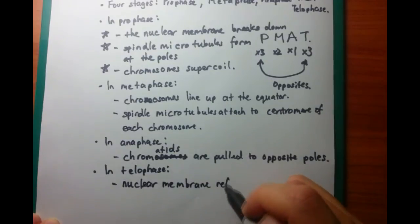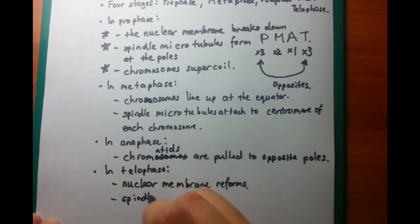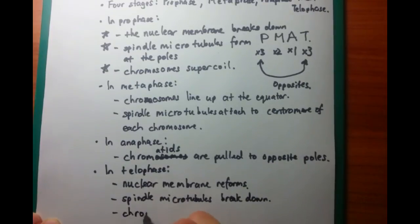And the second thing is that, if we look back up at prophase, spindle microtubules formed at the poles. So what's going to happen? The opposite of form is to break down. So spindle microtubules are going to break down. The third thing is that chromosomes are going to uncoil, and that's what's going to happen in telophase. And that's the end.